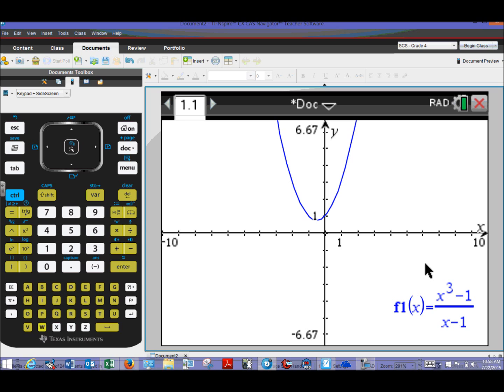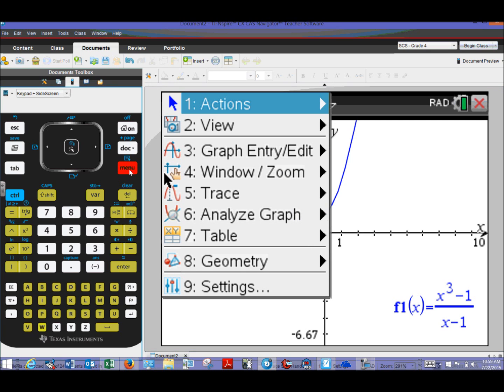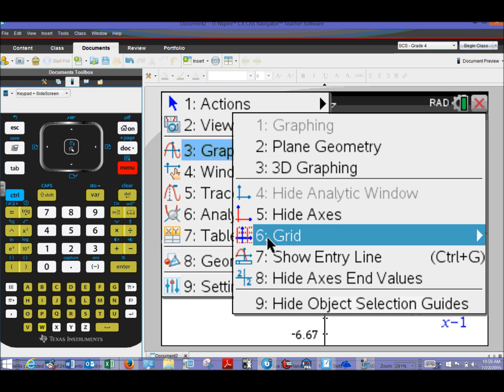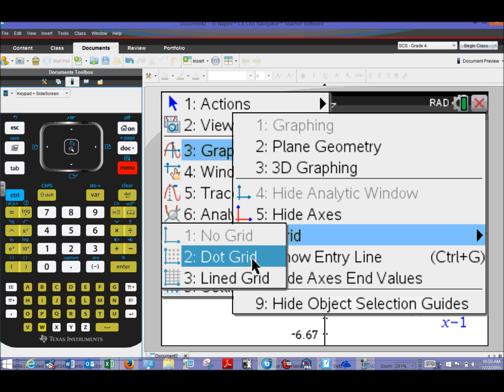And I'm going to do something else here. I really like the grid line feature with the calculator. So while I'm in this graphing screen, I can hit Menu and bring up graphing screen menu items. And the one that I like here is View, Grid, Lined Grid.